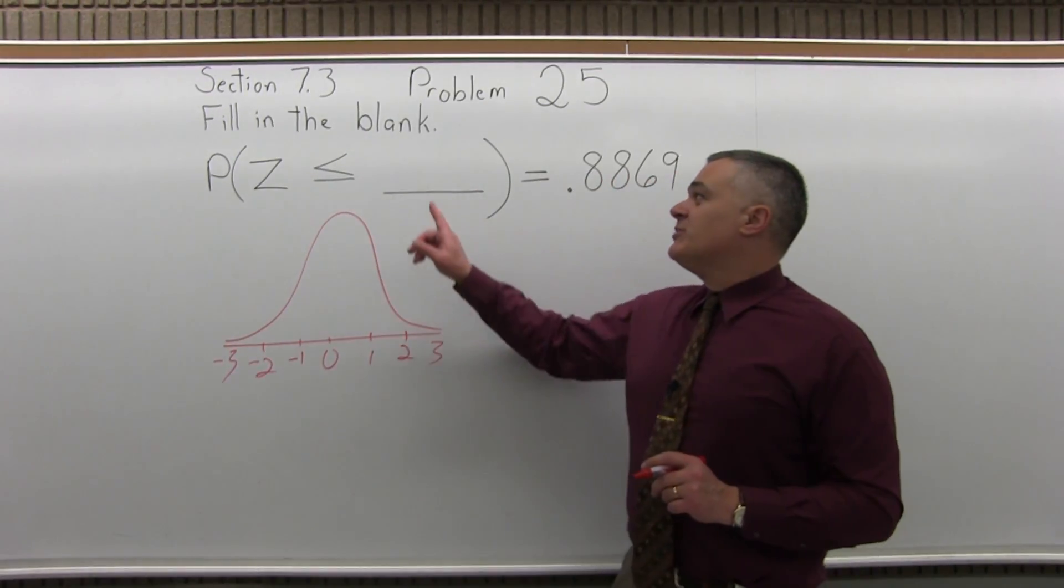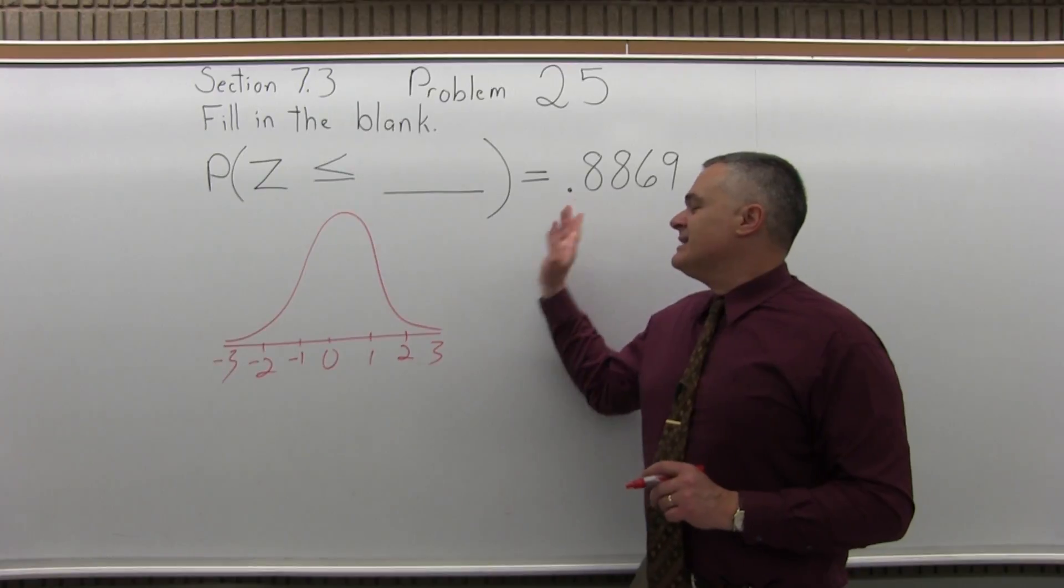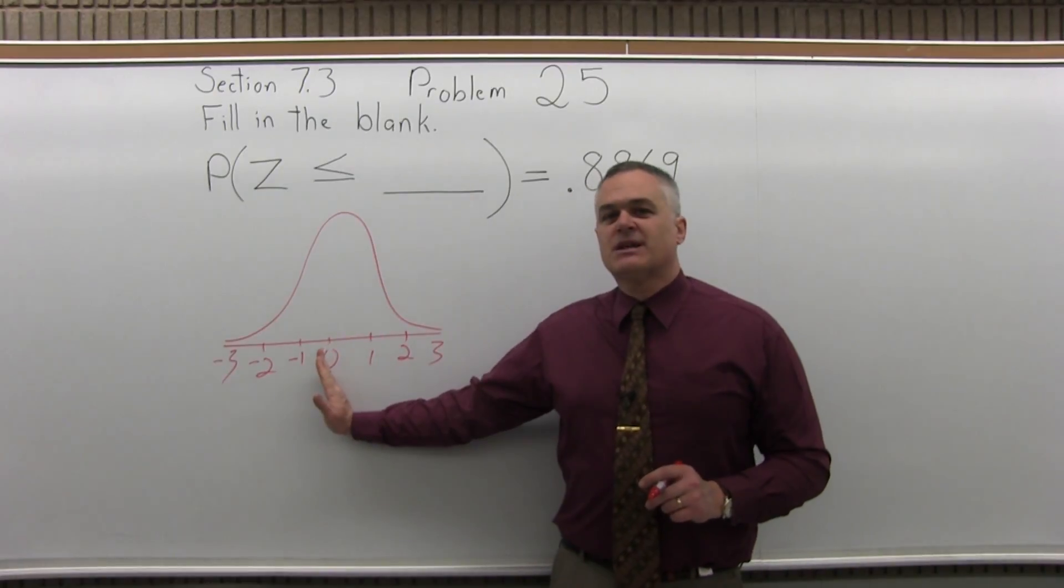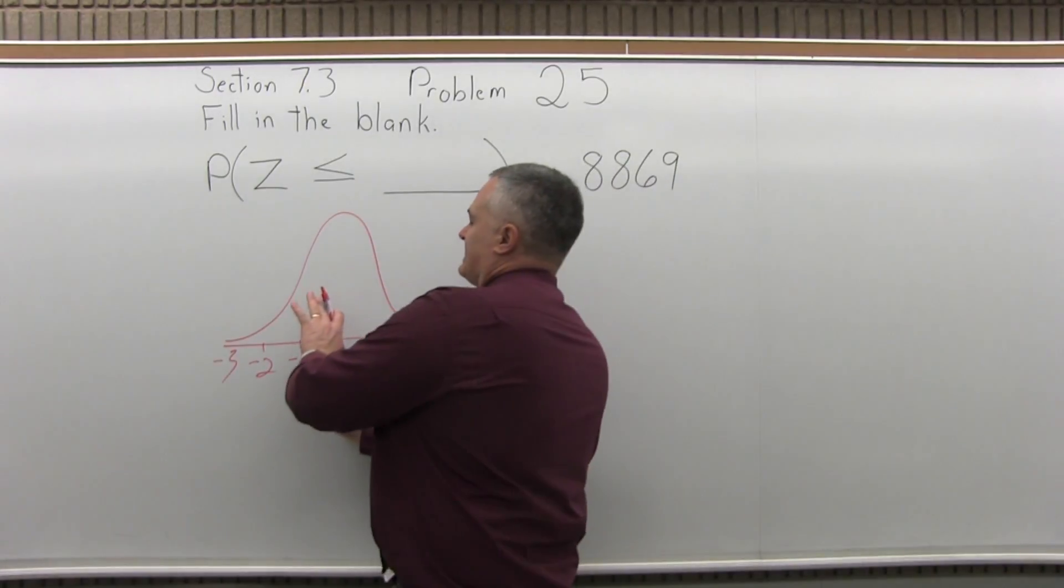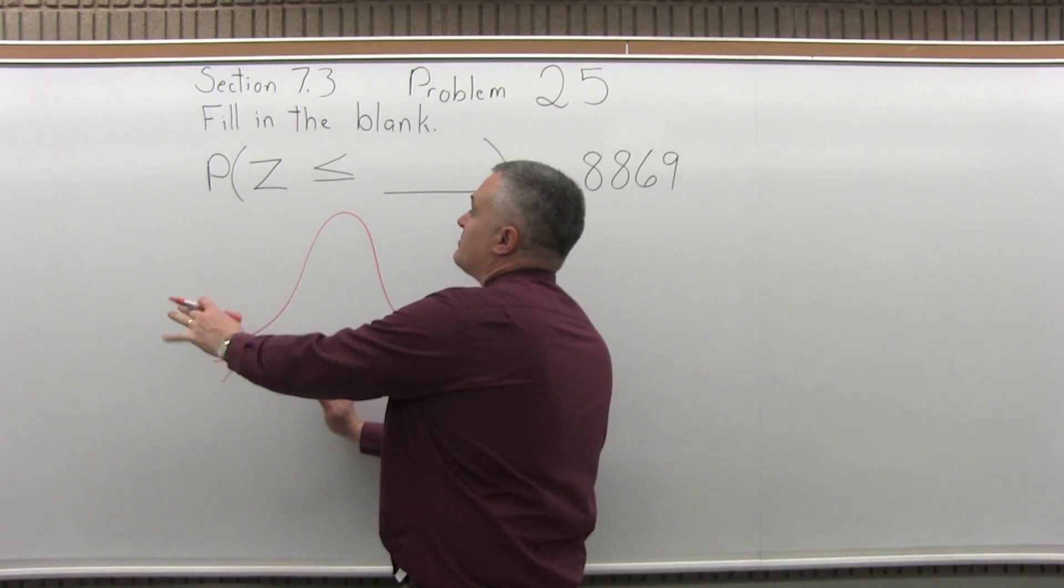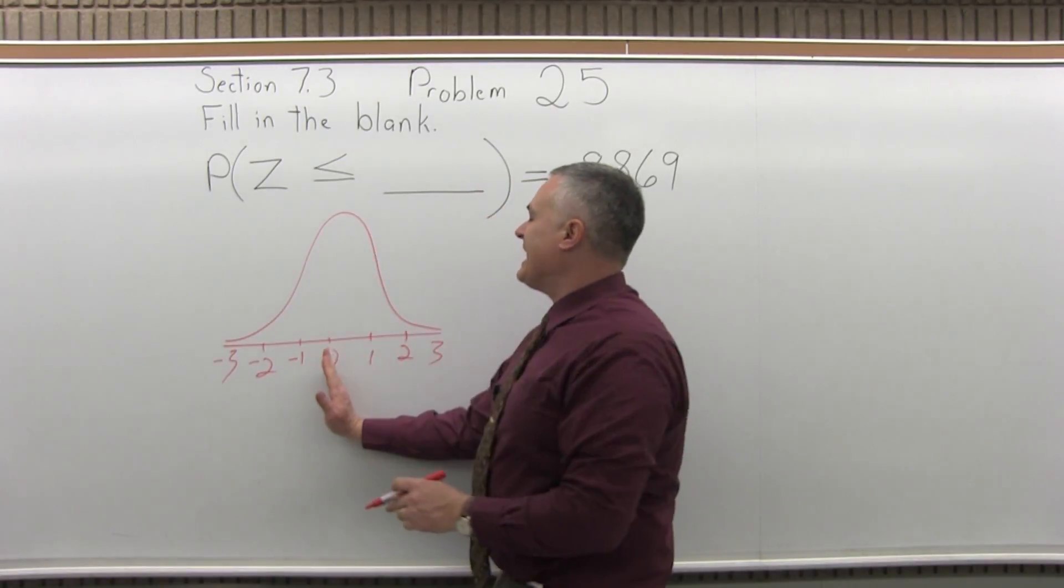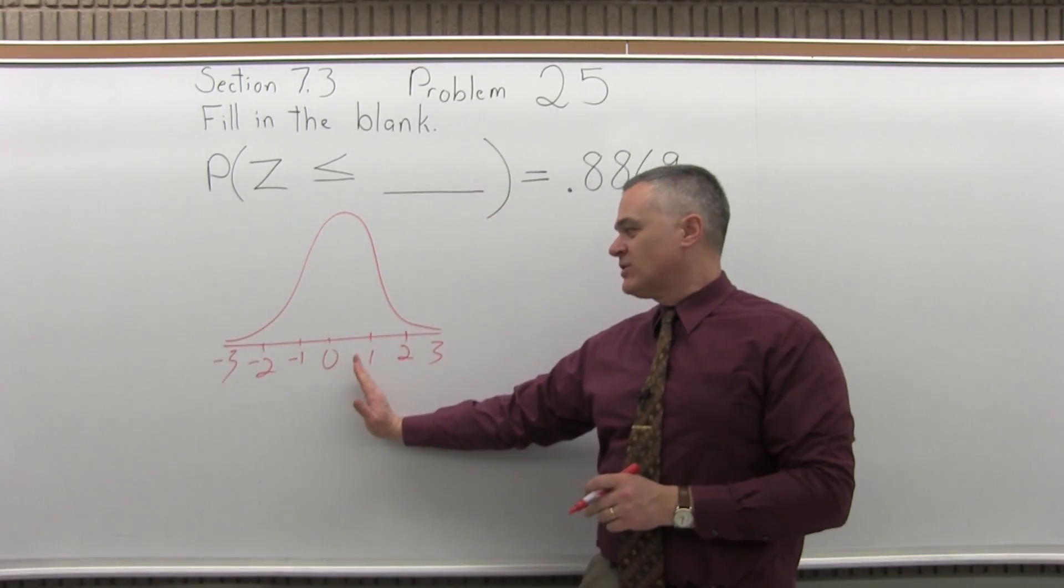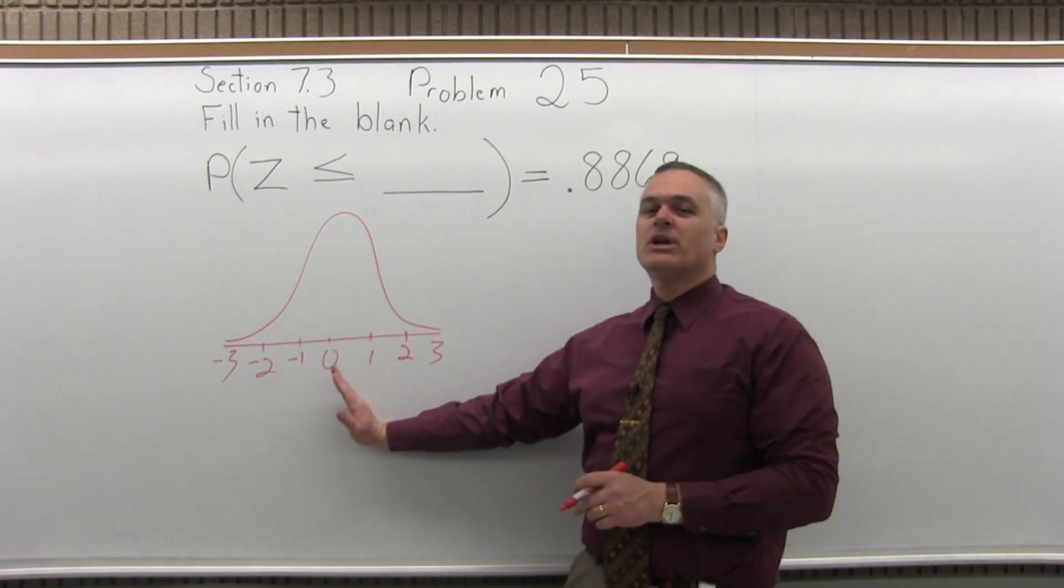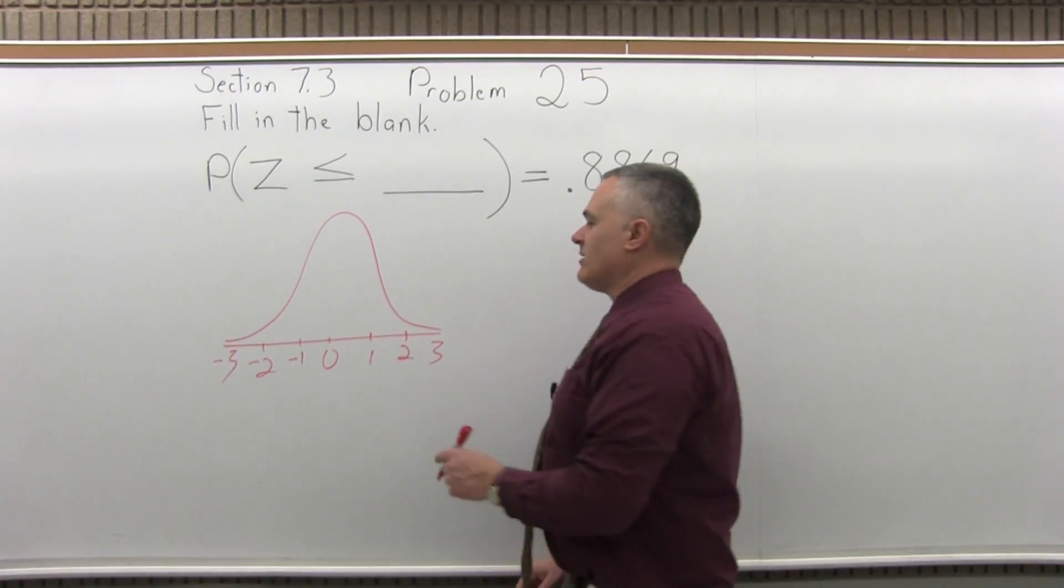So the probability of being less than some value is .8869. I know if I start at the center, the probability of being less than that zero in the middle is .5. So .88 is more than .5, so to be less than that, I'm pulling it over to the right a little bit.